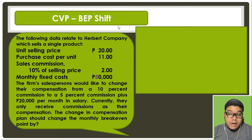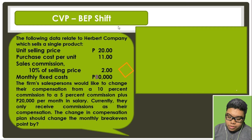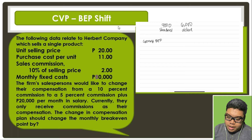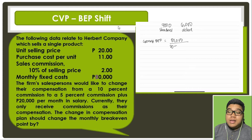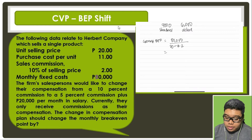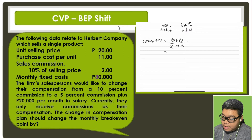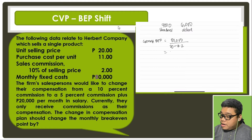The unit selling price is 20. So for the current break-even point, the current fixed cost is 80,000. We have to compute for our contribution margin: 20 selling price minus purchase cost of 11 minus 2 for the sales commission. Therefore our contribution margin is 20 minus 11 minus 2, which is 7. So 80,000 divided by 7 is our current break-even point.